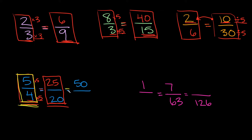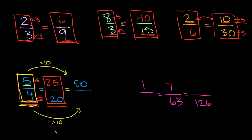So we have five over four is equal to 50 over something. How do you get from five to 50? Well you have to multiply by 10 — five times 10 is equal to 50. So if we're going to multiply by 10 up here we also have to multiply by 10 down here. What's four times 10? That's 40. So five over four and 50 over 40 are equivalent fractions.